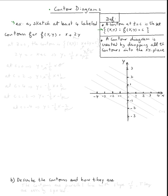So a contour at the height z equal c is the set of all points x, y such that f of x, y equals c. So in other words, at the height z equal c, the contour of f of x, y is the set of all points x, y such that f of x, y, which happens to be x plus two y, equals some constant c.